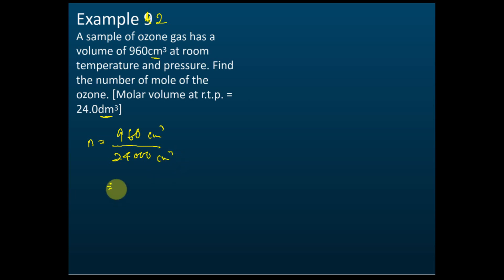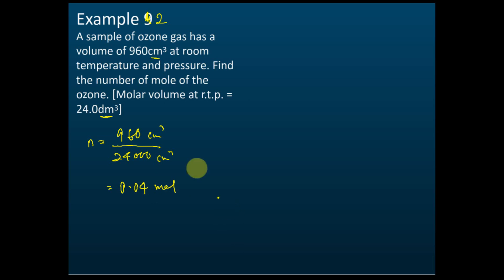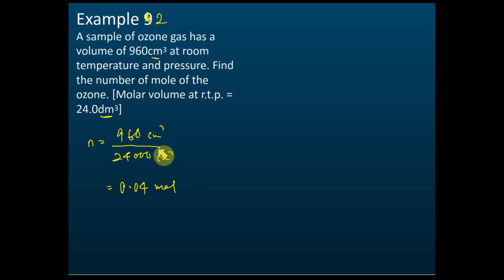The answer is 0.04 moles. That is how we find the number of moles — we take the volume of the gas divided by the molar volume. You must be very careful about the units. If the volume is in cm³, then the molar volume must also be in cm³.